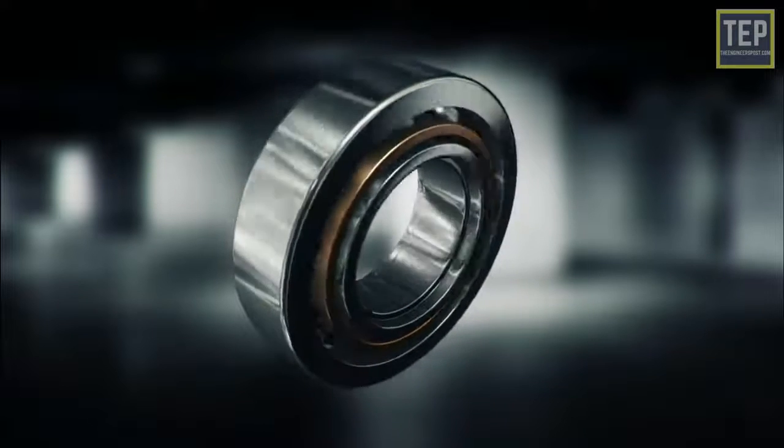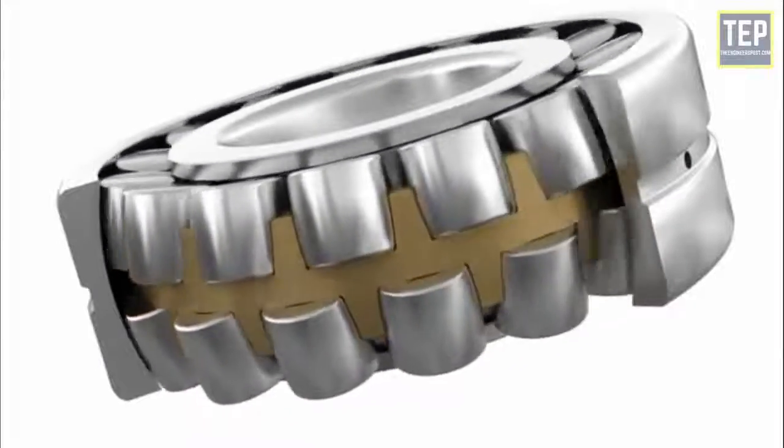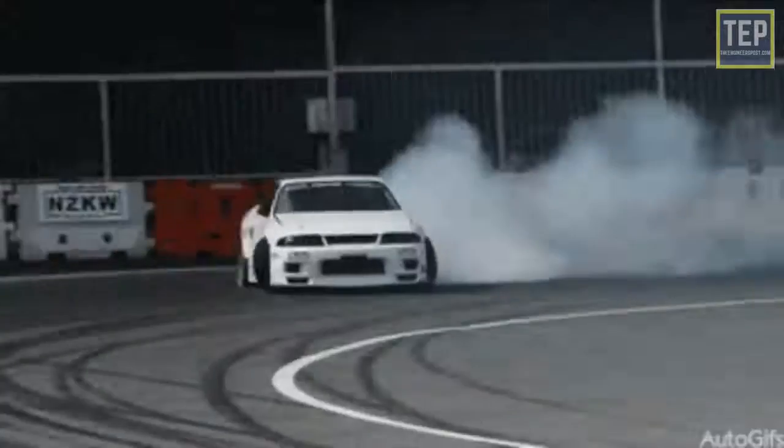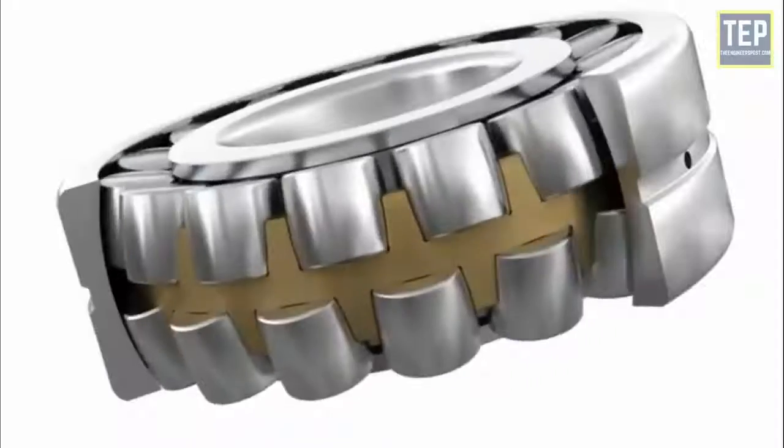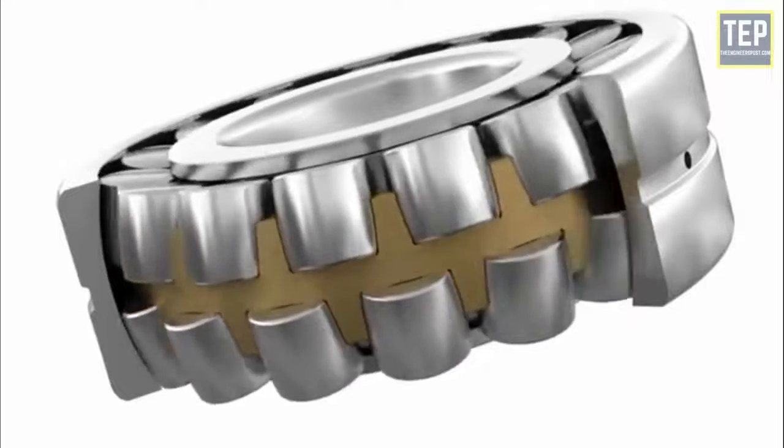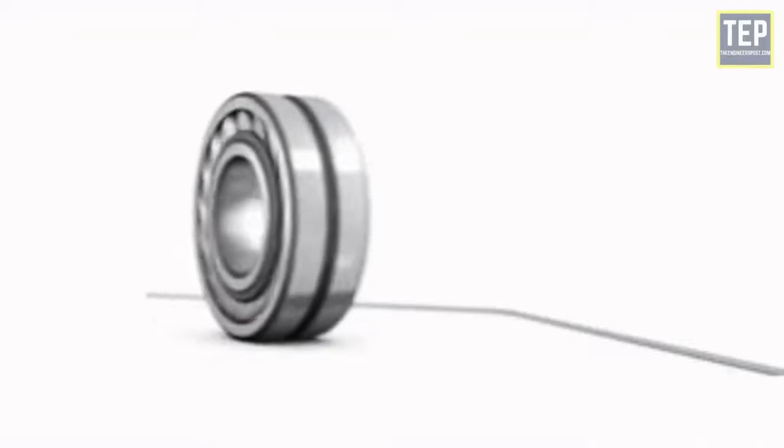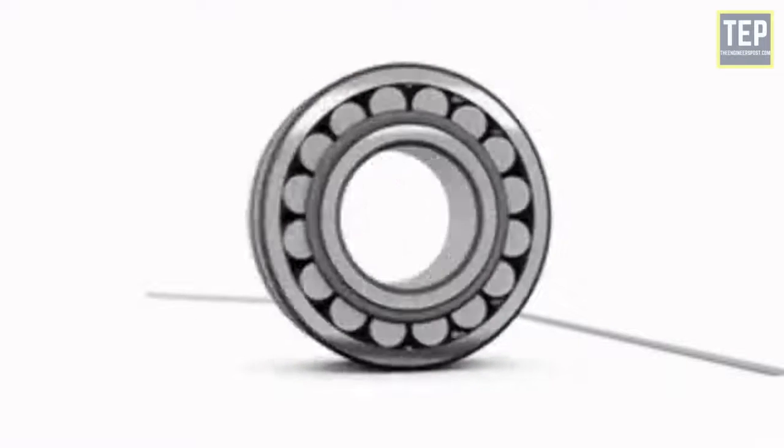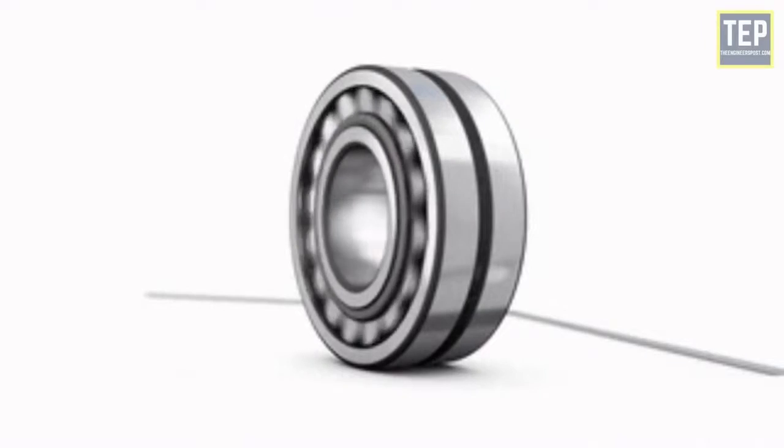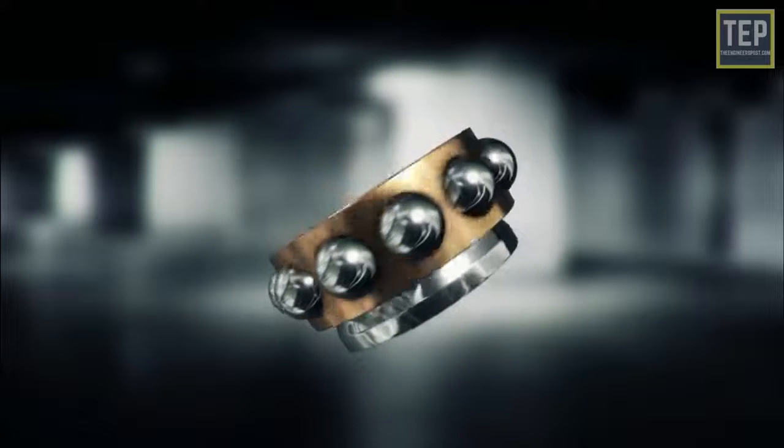Rolling element bearings contain rolling elements in the shape of balls or cylinders. We know that it is easier to roll a wheel than slide it on the ground, as the magnitude of rolling friction is lower than sliding friction. The same principle is at work here. These bearings are used to facilitate the free movement of parts in rotational motion.